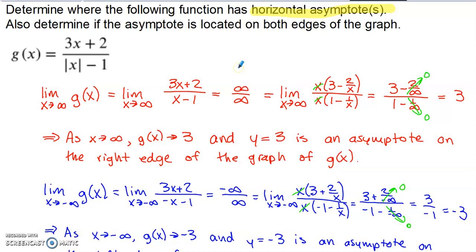If we are looking for horizontal asymptotes, we need to figure out what's happening way over on the right edge of the graph as x approaches infinity. And if we're checking out both edges of the graph, we're going to have to figure out what's going on as x approaches negative infinity way over on the left edge. We'll talk about this positive infinity limit first.